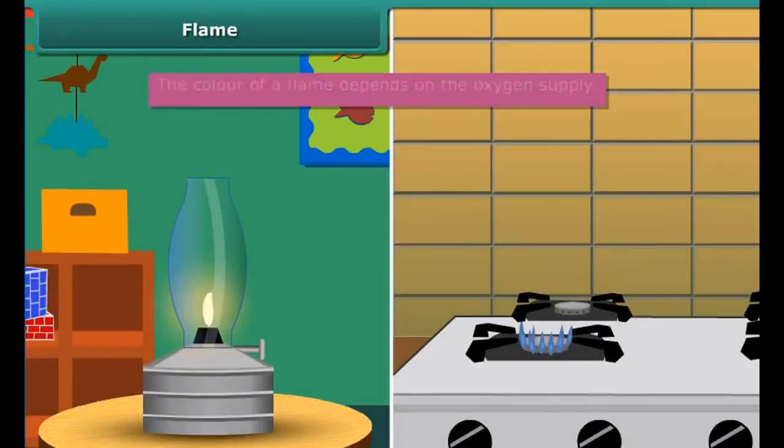When we look at a flame of kerosene lamp it is yellow in color, but the flame of a kitchen stove is blue. It is interesting to know that the color of a flame depends on the oxygen supply. If the oxygen supply is less, flame will appear yellow due to incomplete combustion of fuel. If it is more, the flame will appear blue due to complete combustion of fuel. Do you know how these flames are obtained?